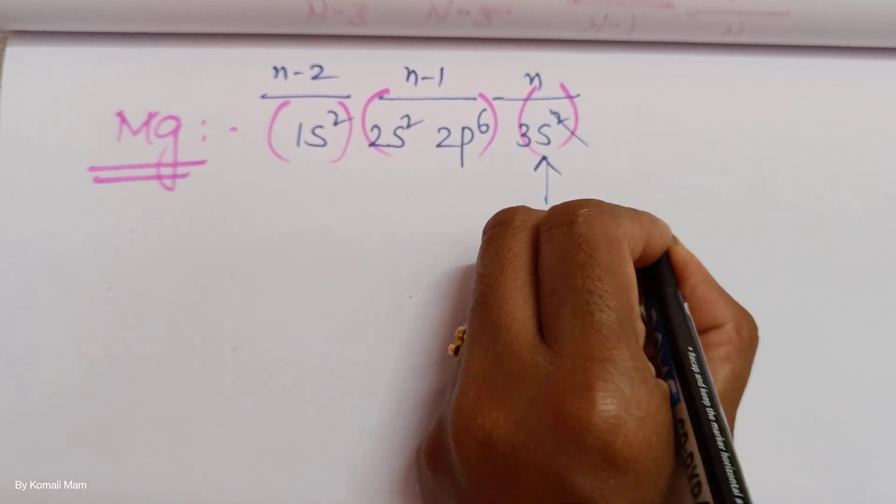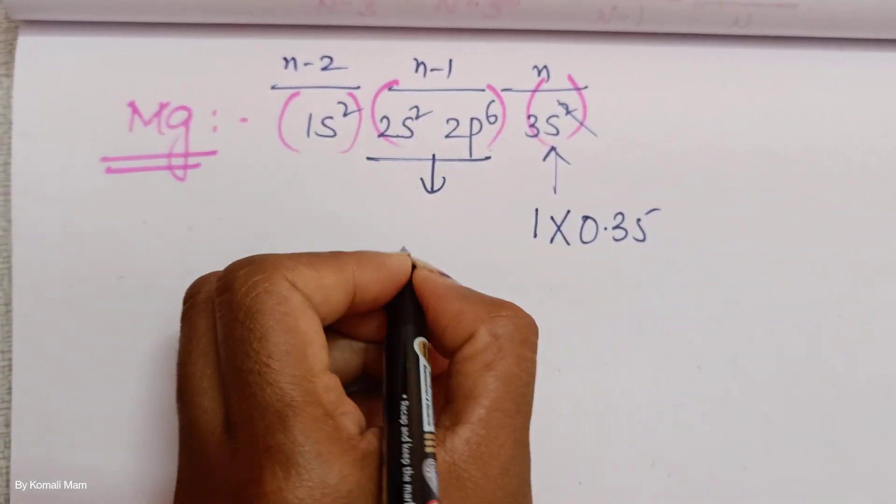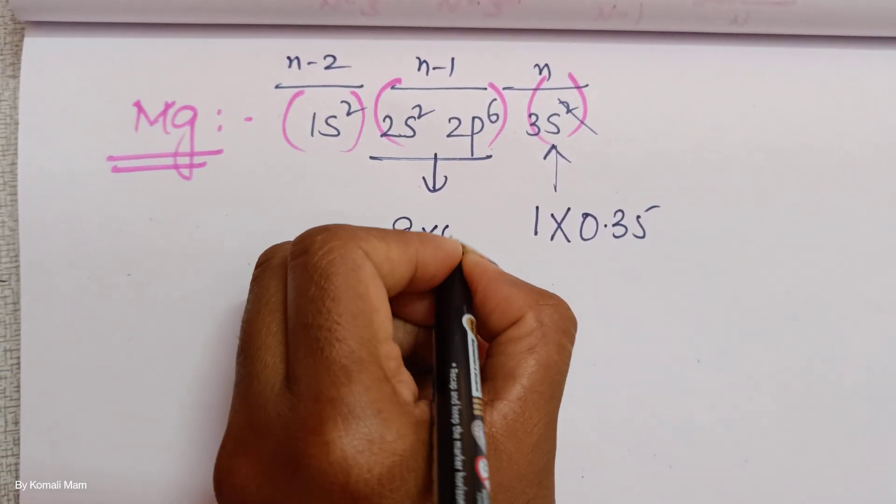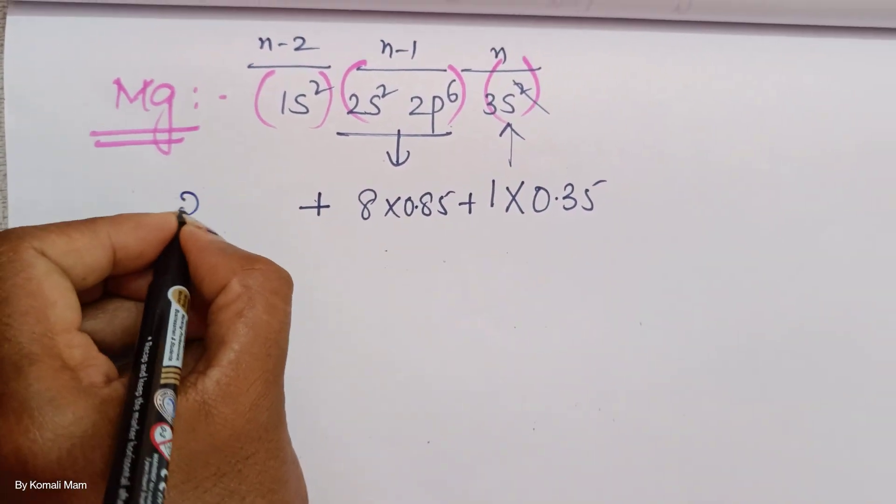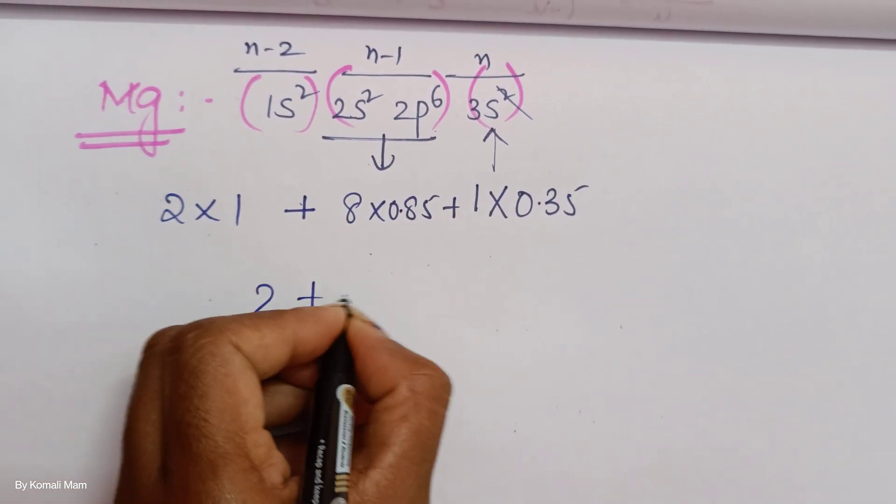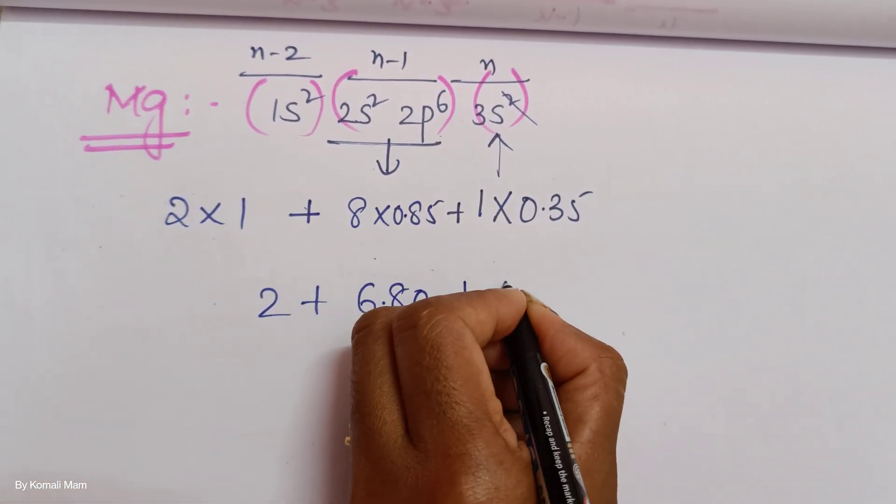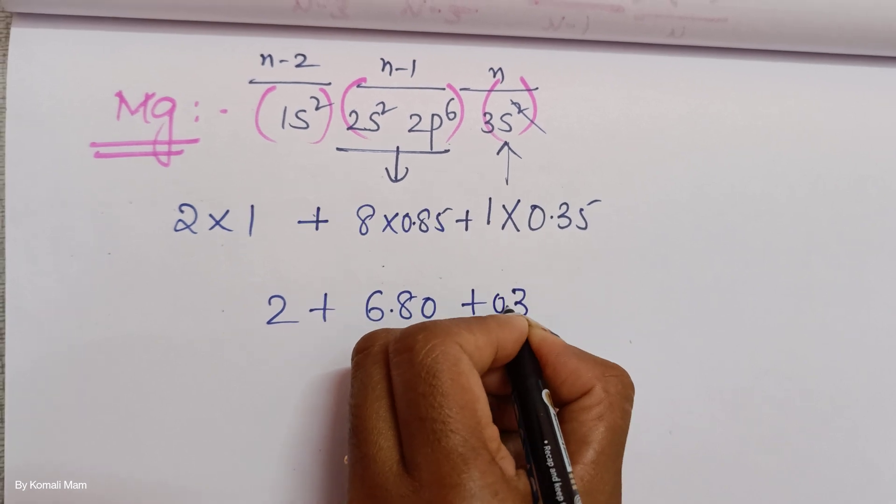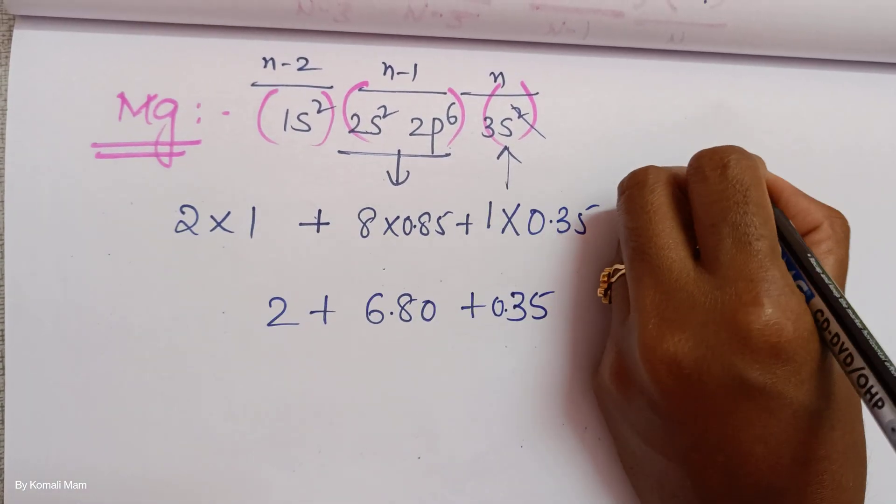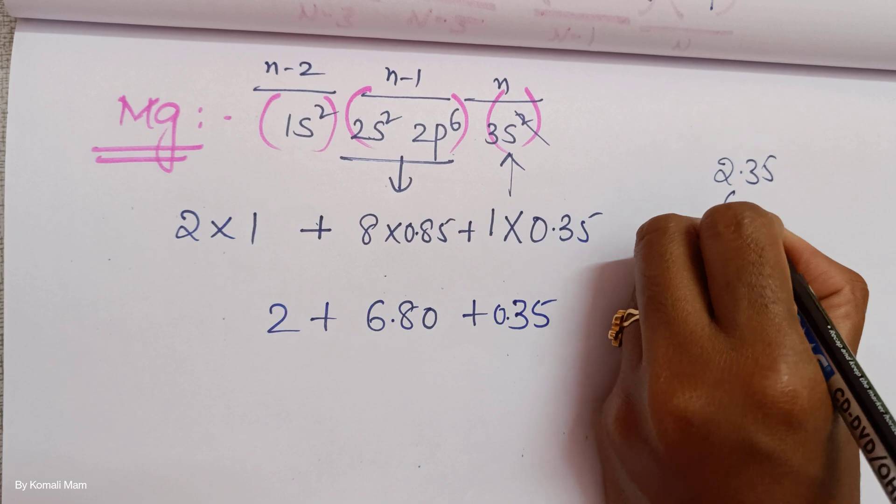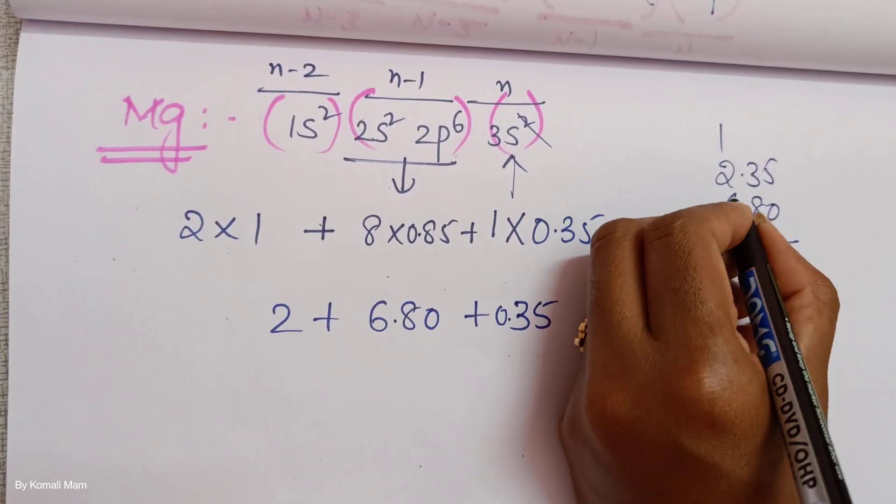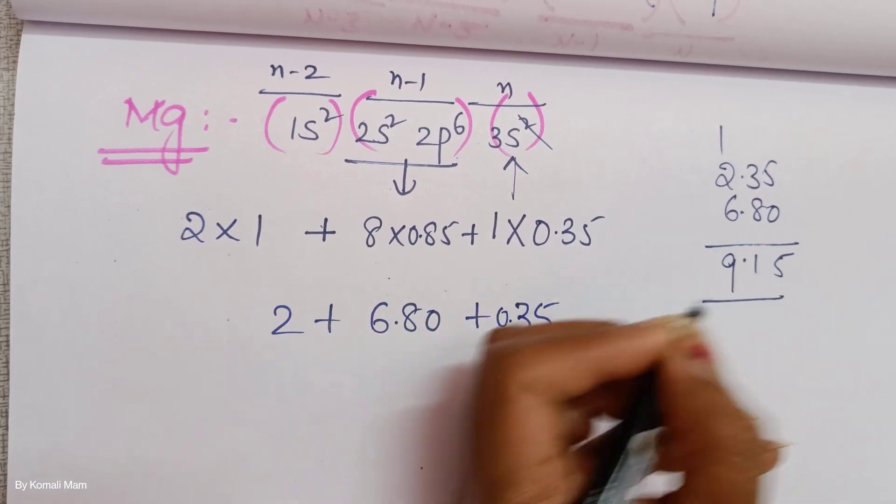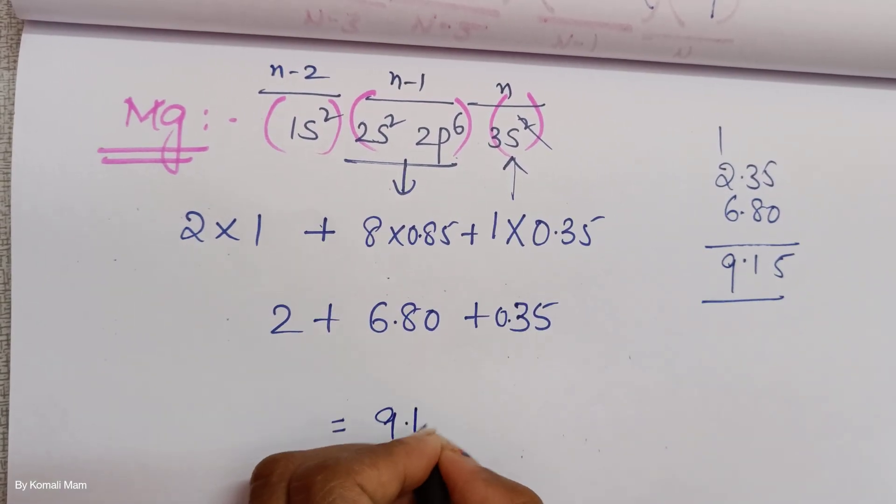So 0.35 and for remaining, it is 8 into 0.85 plus 2 into 1. So it is 2 plus 6.80 plus 0.35. How much is it? 2.35 plus 6.80. 5, 11, 1, 6, 7, 8, 9. 9.15. This is what sigma value. Correct?